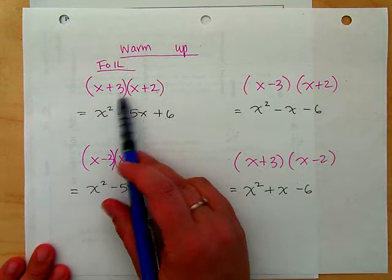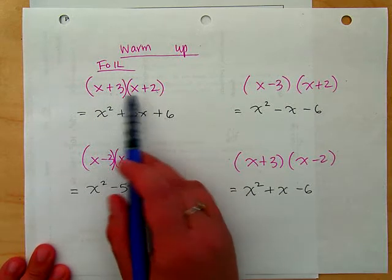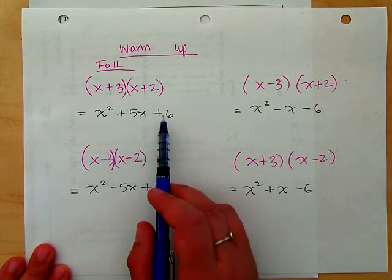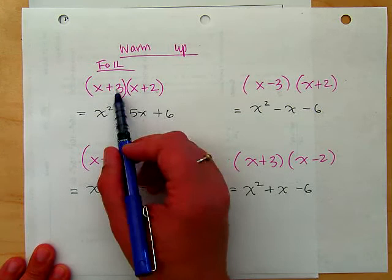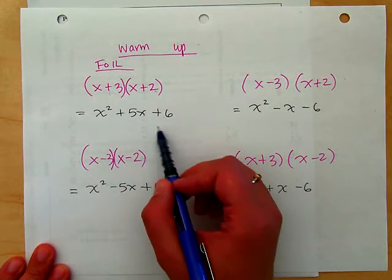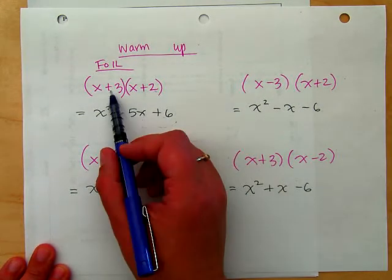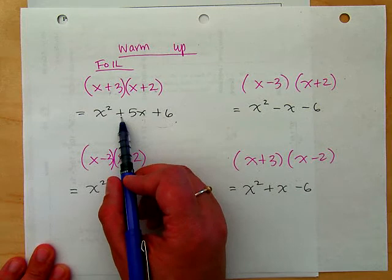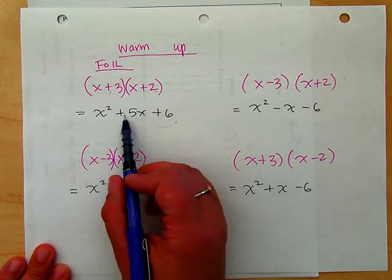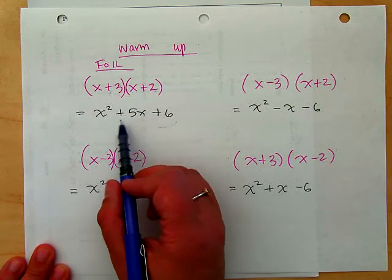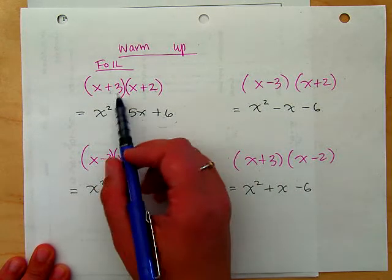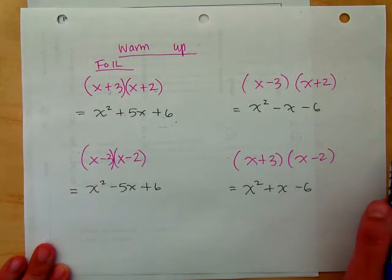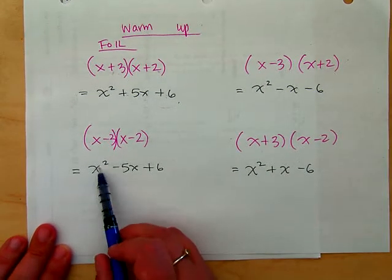Thinking about the signs: if you have positive-positive here, you're always going to have positive-positive, because two positives multiply to give a positive and two positives add to give a positive. So if you see positive-positive when factoring, you know those two signs are also going to be positive-positive.